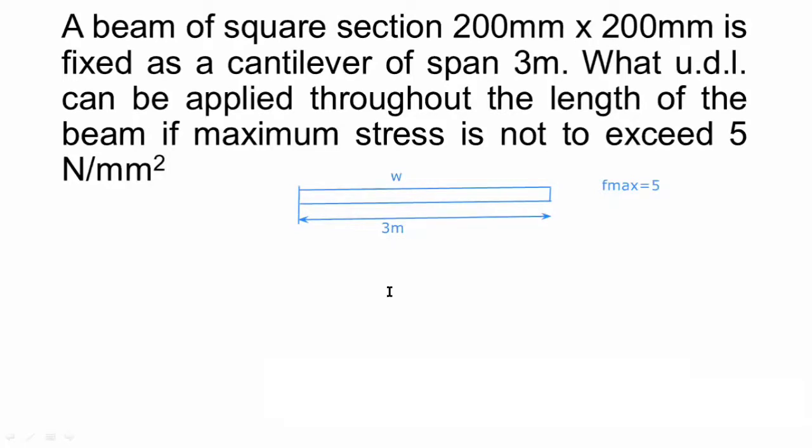So what I can find is maximum bending moment. What will be maximum bending moment for a cantilever beam? It will be WL square by 2. So let us find out. M max is equal to L square is 3 square, so 9. So W into 9 upon 2. So it is 4.5 W. Maximum bending moment is 4.5 times W. So now I know what is moment in terms of load, I have to find this UDL.